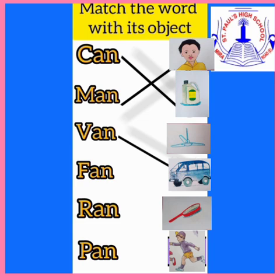Now we shall go to the next word. Fan. F, A, N — fan. Fan. Children, find out where is the fan. The fan is in the third position in this picture. Let us match the fan word with its object.